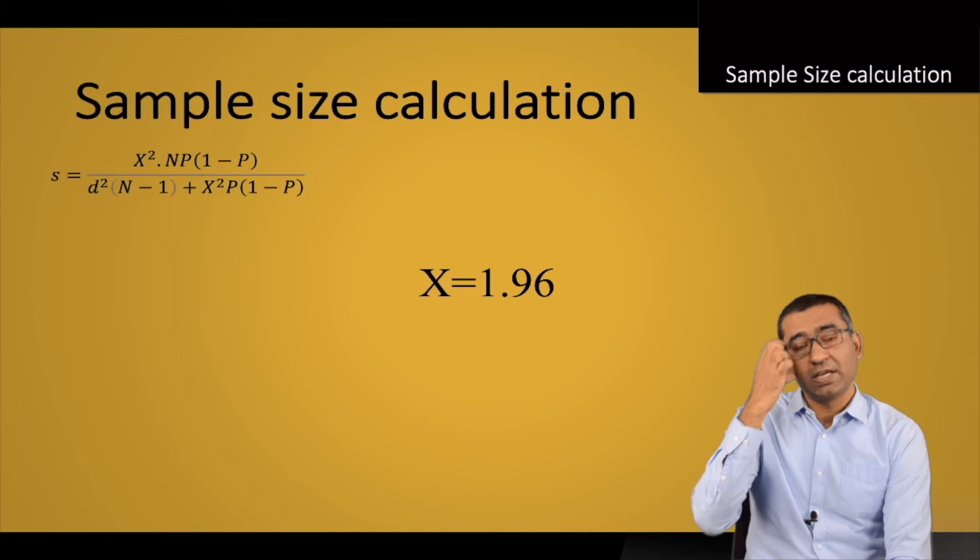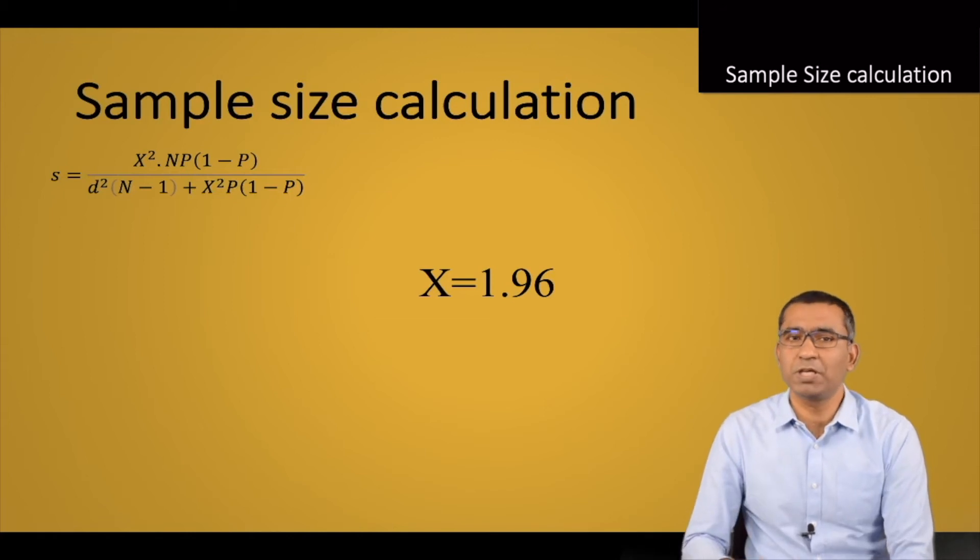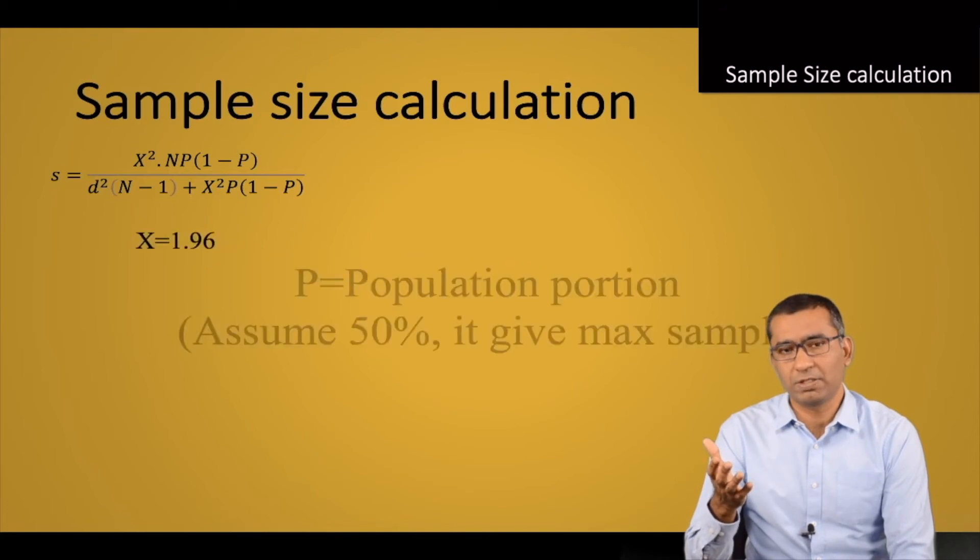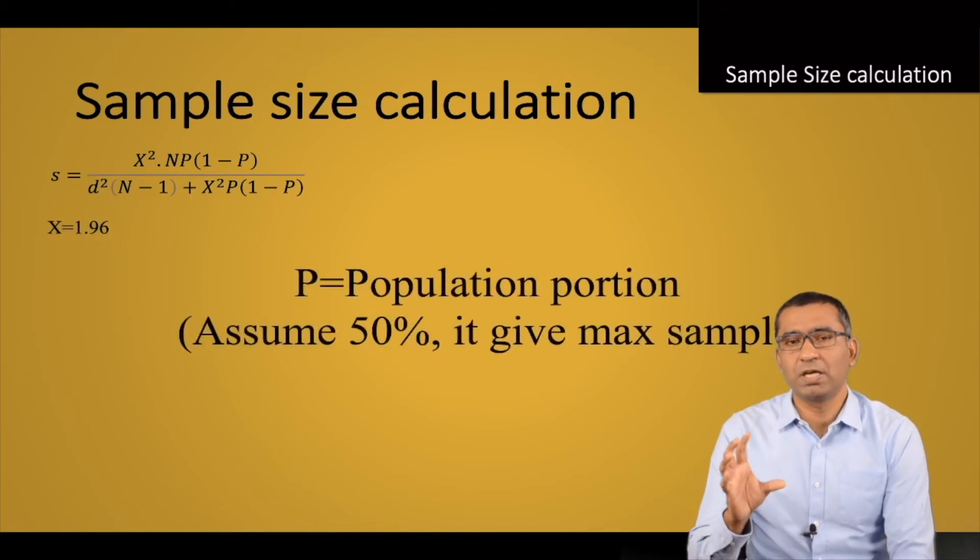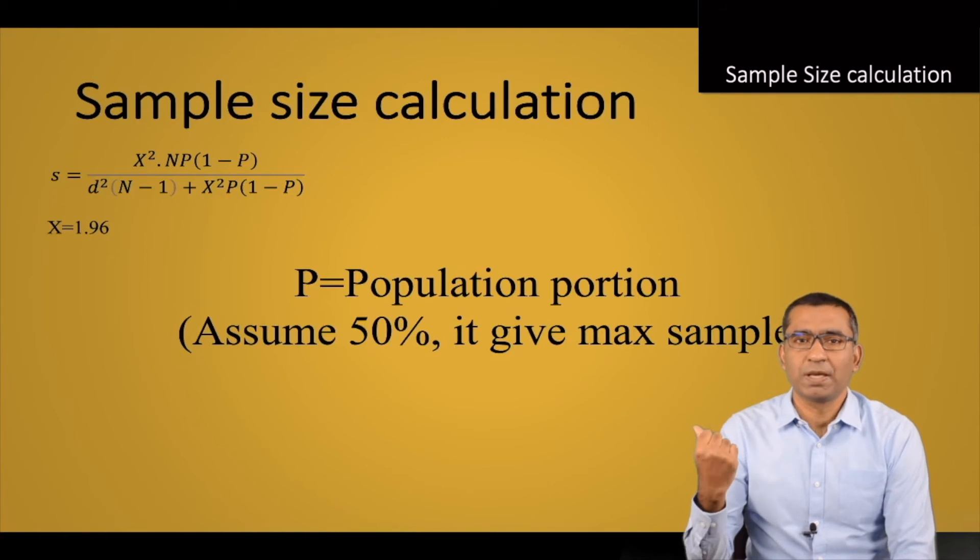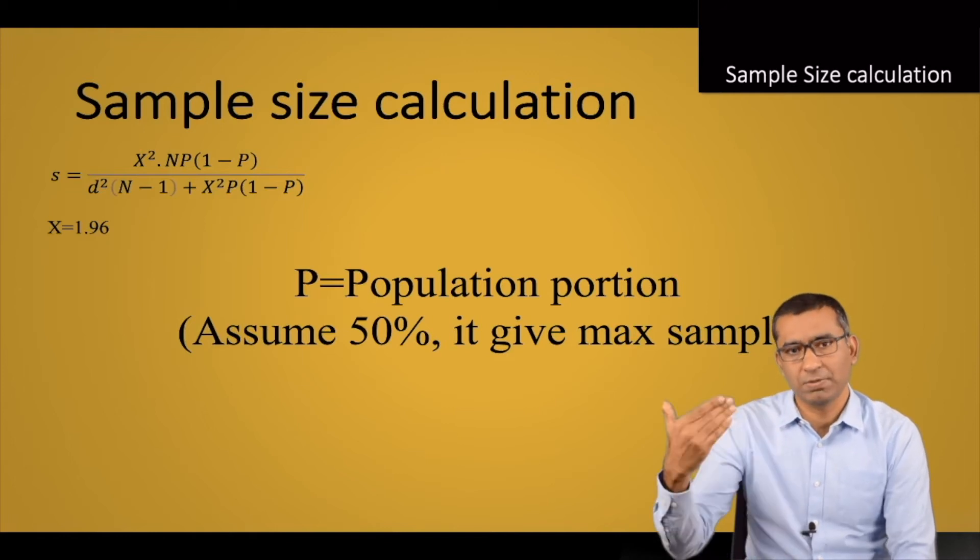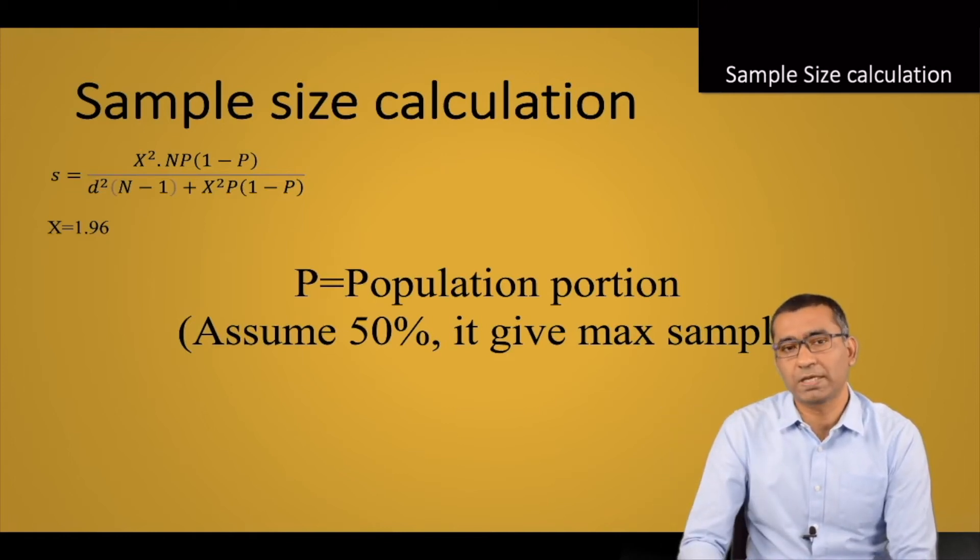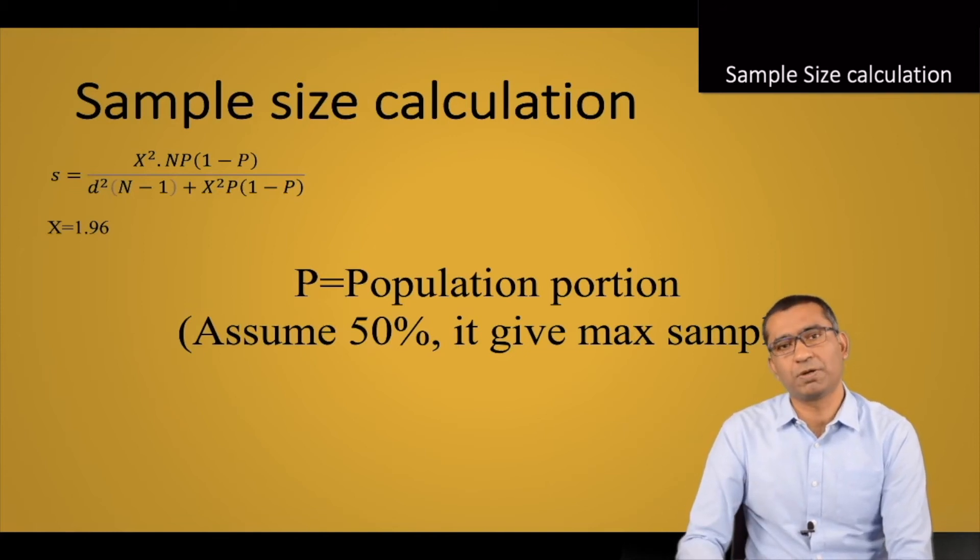The P here is population proportion. There are different debates available on this. Minimum can be 30%, but if you use 50% population proportion in this formula, it will give you the maximum size of your sample. That's why we use this 50%. And d is degree of accuracy, which is equivalent to p.